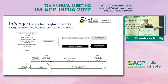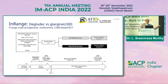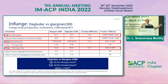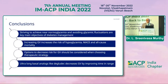The latest publication from ATTD in Barcelona this year is the IN RANGE study, where Degludec and Glargine U300 — supposed to have lesser hypoglycemia — were compared in a CGM-based multicentric RCT. The results show TIR, HbA1c, and time above range all had a positive effect, with 44 minutes more time in range and lower HbA1c in the Degludec arm.